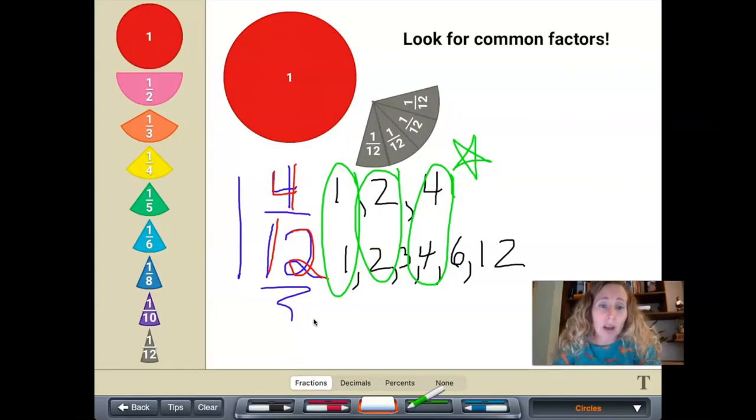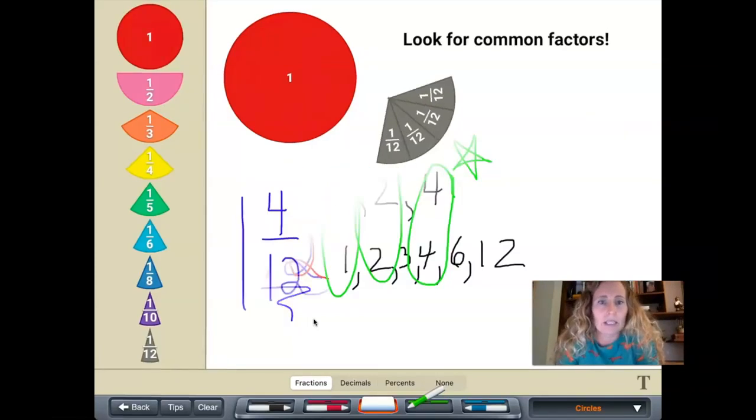And so if we divide the top number and the bottom number both by four, remember we always have to use the same number when we're dividing or multiplying those fractional pieces. So if we divide these both by four, we should be able to get this exact amount, but in simpler form. Let's take a look at that.